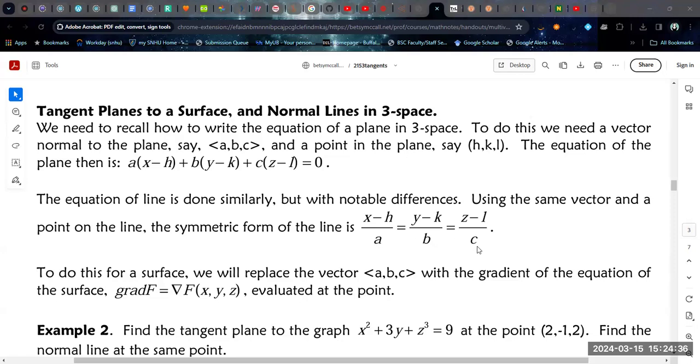Now, if A, B, and C are, if any of these are 0, that's no problem for the plane. That is a problem for the symmetric form of the line. It may be better to write the equation of the normal line in parametric form, so as R of T, a function of R of T, then it won't matter if one of these is 0. You can just leave it out of the equation.